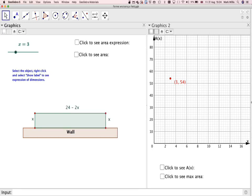So if I move that, I'm going to get different values. So what is going to be the area of this rectangle? Well, the area of this rectangle is going to become x times 24 minus 2x, which if I expand the brackets becomes 24x minus 2x squared.